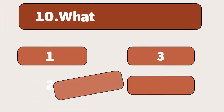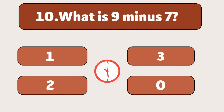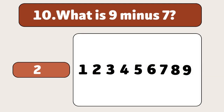What is nine minus seven? Two. Start with nine and take away seven. We're left with two.